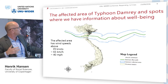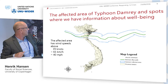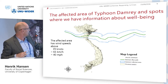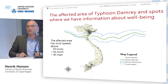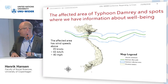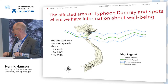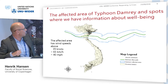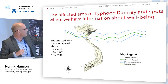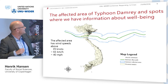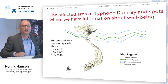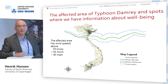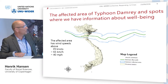We define an area as hit by Typhoon Damrey if it experienced wind speeds above 35 knots — that's 40 miles per hour or 65 kilometers per hour — which is enough to move people and buildings. So we have the storm trajectory as the center, and the northern and southern boundaries where wind speeds exceeded 35 knots. We define this region as the area affected by Typhoon Damrey, and areas outside were not affected. The black dots represent communes for which we have household survey data.